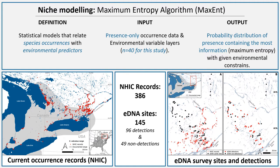We have the current occurrence records from the Natural History Information Center, which compiles occurrence records of this turtle via traditional observations. On the right side, we have the eDNA sample sites from the Kingston area all the way to the edge of Algonquin Park. Altogether, we have 386 NHIC records — that is traditional observations — along with 145 eDNA survey sites, with 96 detections and 49 non-detections. Combining the NHIC records and eDNA detections, we built a model using the maximum entropy algorithm.